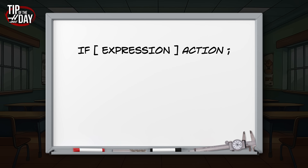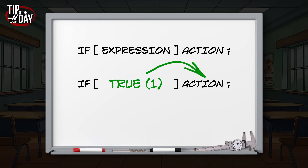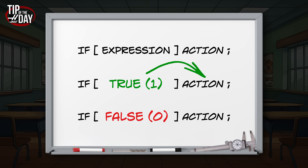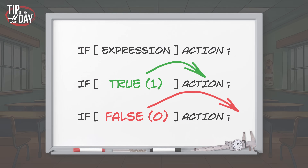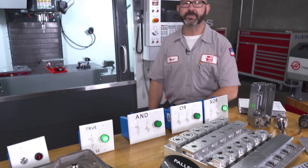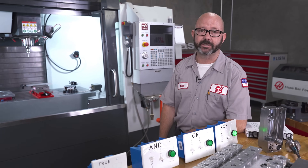If our expression evaluates as TRUE, the control will execute the code at the end of our IF statement. But if our expression evaluates as FALSE — as a LIE — the control will skip over that code and continue on with our program like nothing had ever happened. Let's put our IF statements to practical use.